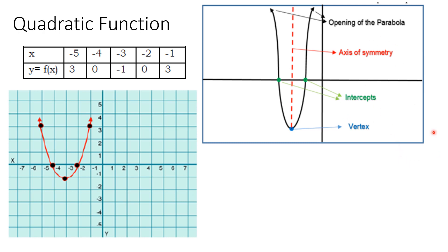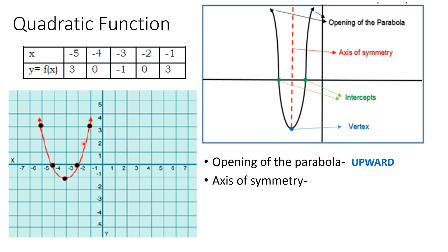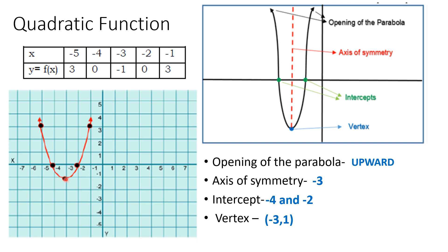Let's identify the parts of the parabola in our given example. We determine the opening — it opens upward. Next is the axis of symmetry, which is at negative 3. Next are the intercepts — there are two points: it intercepts at negative 4 and negative 2. And the vertex, or the lowest point, has coordinates negative 3 and negative 1.